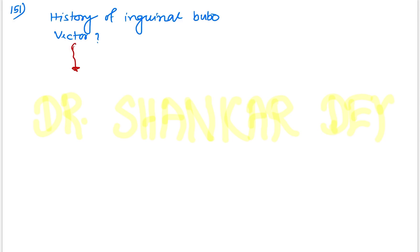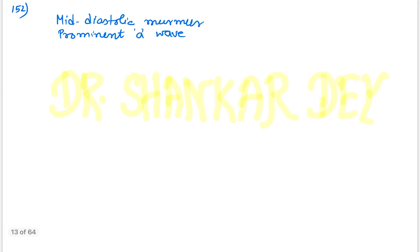Question 151: History of inguinal bubo was present — long question, but the clinical clincher was inguinal bubo. The vector for this case is Xenopsylla (rat flea). That is the answer.